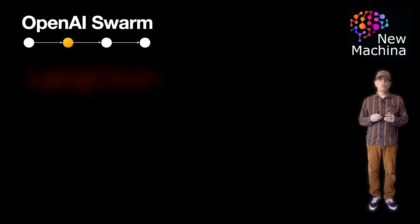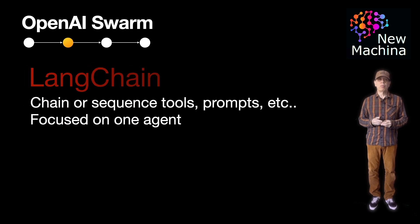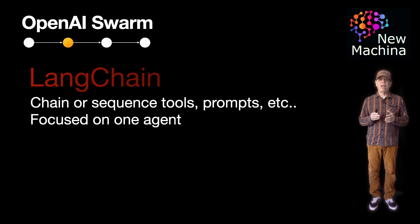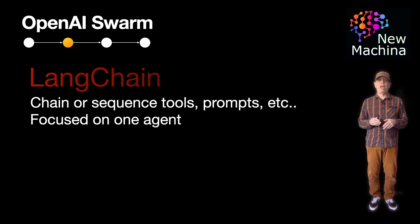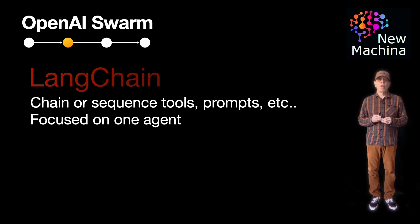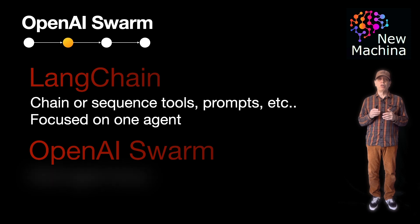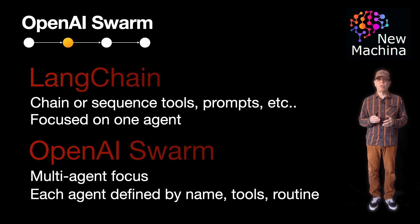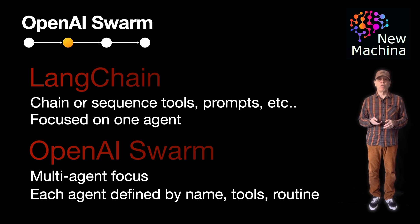So how does Swarm compare to Langchain? Well, Langchain is primarily designed to help developers build one powerful agent composed of a chain of tools, prompts, memory, and logic. Alternatively, Swarm is designed for agentic systems with multiple independent agents that can hand off tasks to each other.